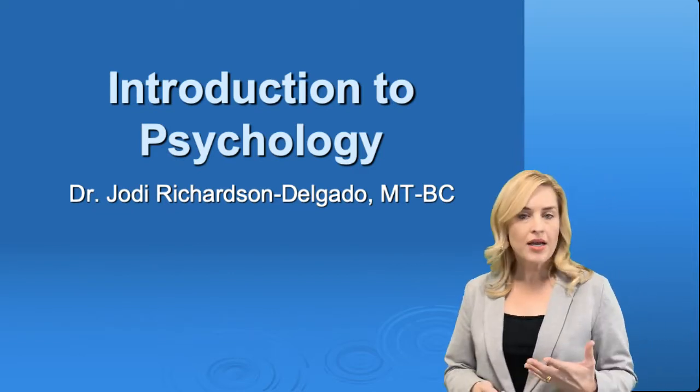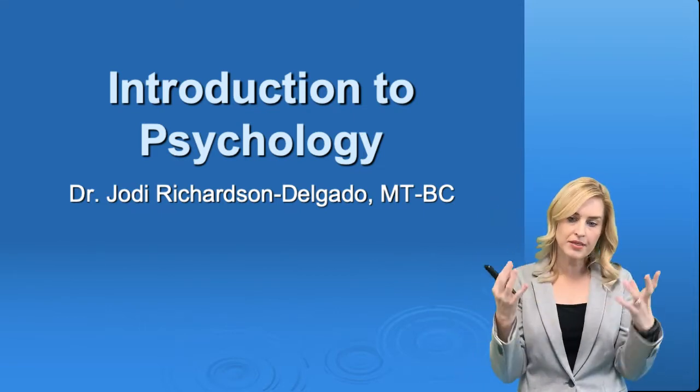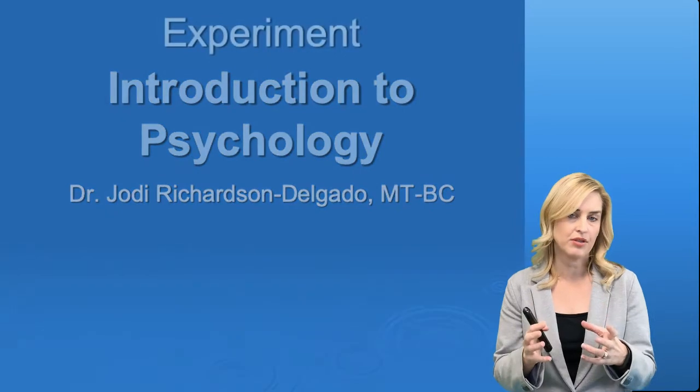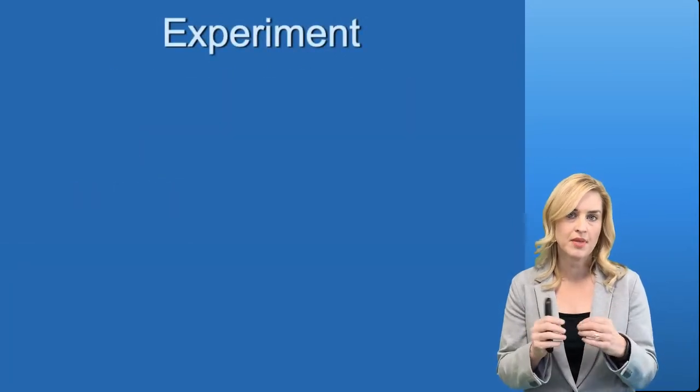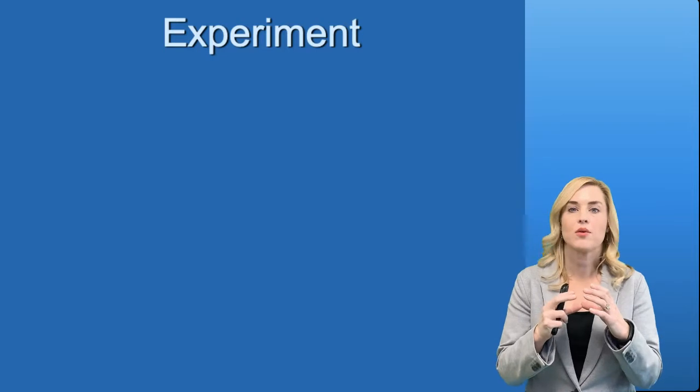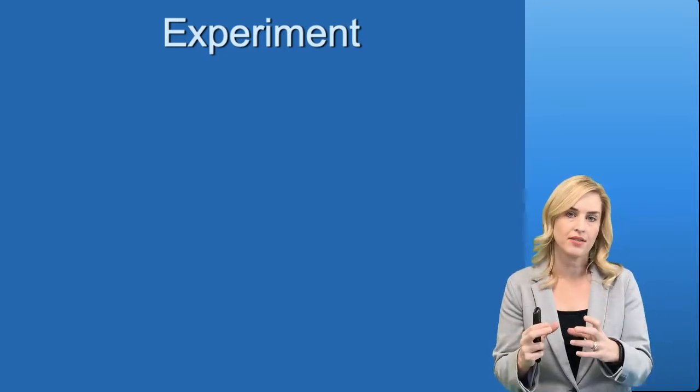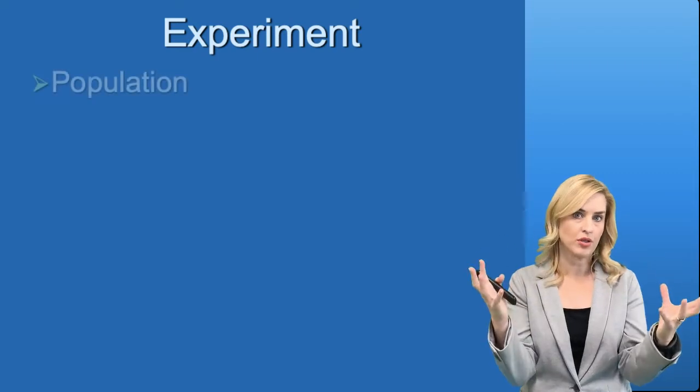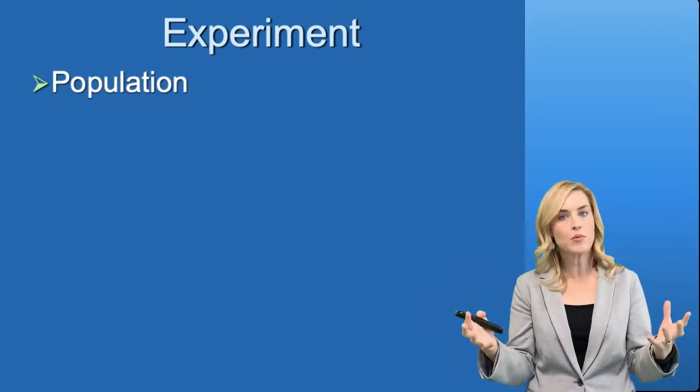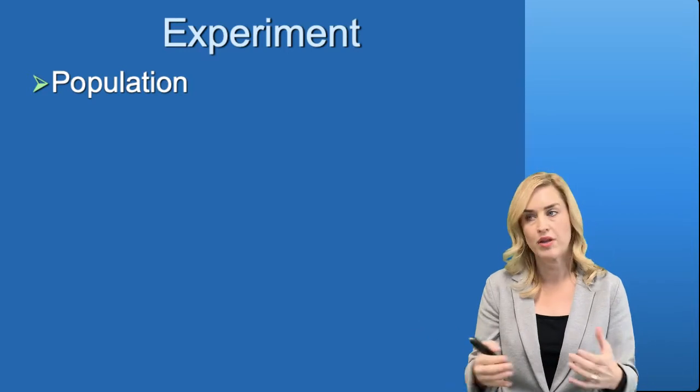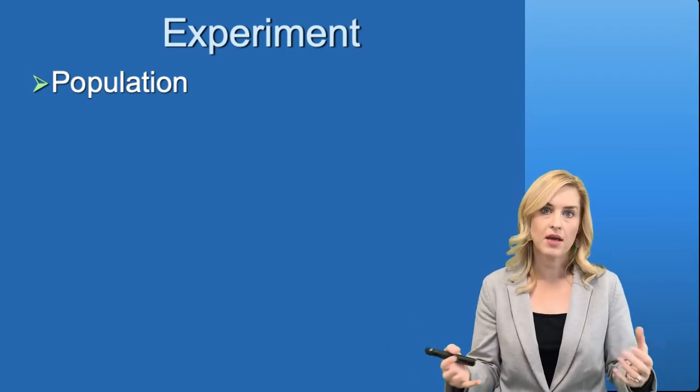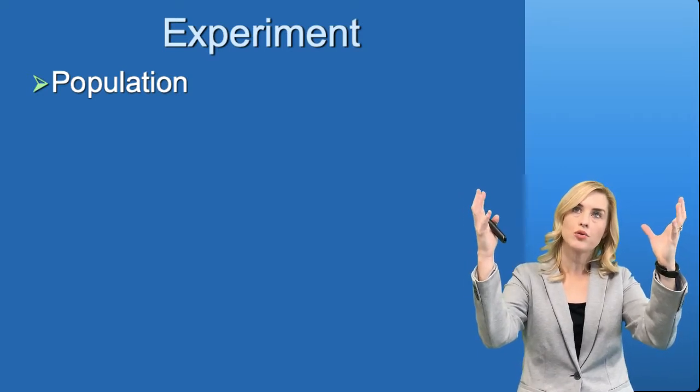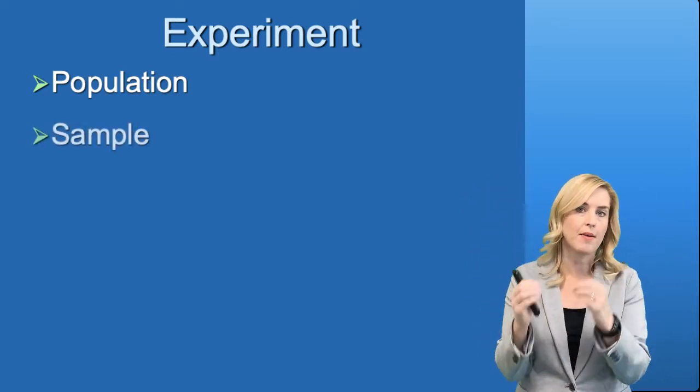When we talk about research, one of the biggest areas in psychology is experimentation. Experiments are one of the ways that we can show cause and effect. This requires us to look at a population that we want to study. Often it's people, but it could be animals—anything that has to do with behavior and mental process. We're looking at a population of people, and now we need to find a sample from that population.